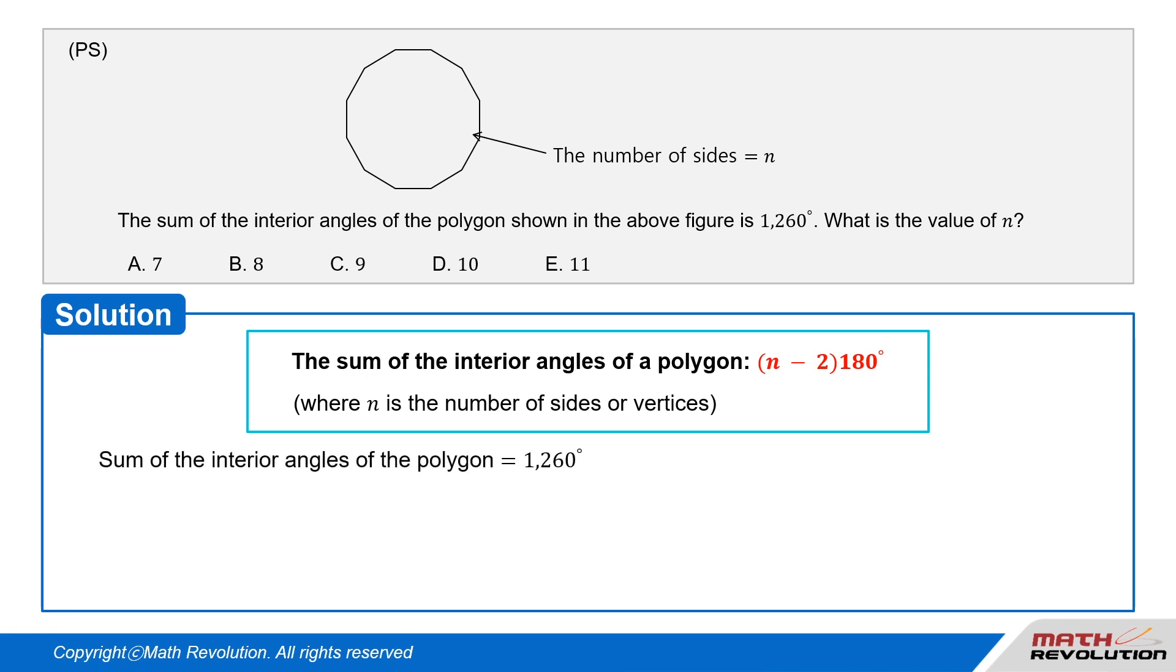This is a straightforward question. We know the sum of the interior angles of the polygon is 1260 degrees. If we use the formula (N - 2) × 180 for the angle sum of a polygon with N sides,